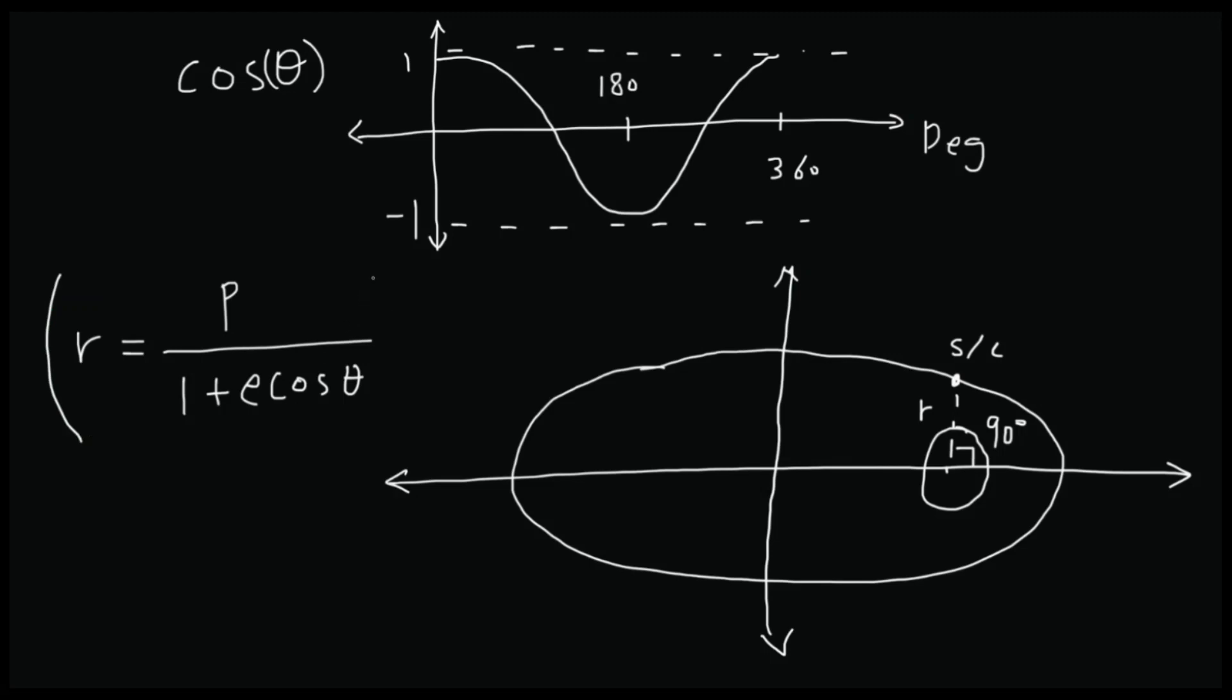I'm going to be really excited. So P is a geometric constraint. It does not change. It's a constant. 1 is also a constant. E is also a geometric constraint. This is also a constant. So what's the only variable that's changing? Well, r, which is the distance from the spacecraft to the Earth, and theta.